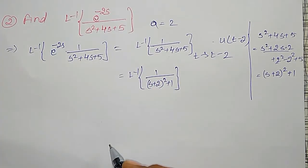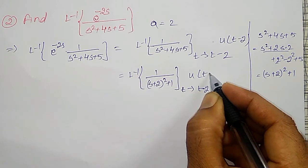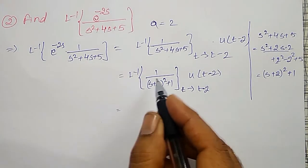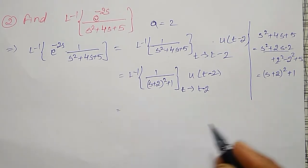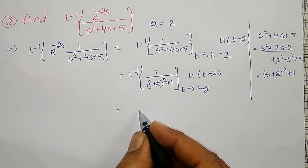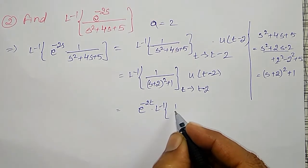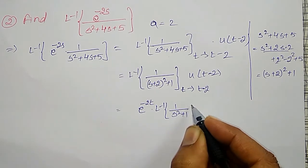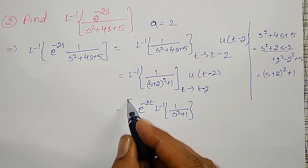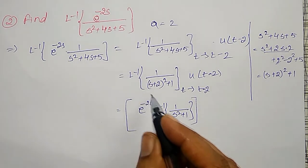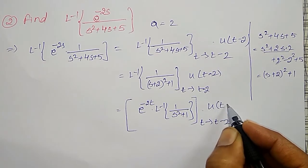And t is replaced by t minus 2 in the final, therefore u(t minus 2). Its inverse Laplace Transform — whenever s plus 2 is there, I can use the first shift property and write it as e to the power minus 2t into the inverse Laplace Transform of 1 divided by s squared plus 1, where s plus 2 is replaced by s and extra multiplied by e to the power minus 2t. In the final, I have to replace t by t minus 2 into u(t minus 2).